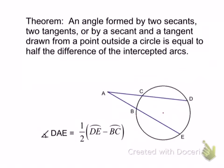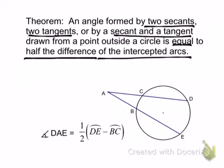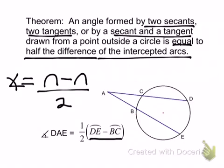The next theorem we want to talk about is for angles formed by two secants, two tangents, or by a secant and a tangent. It says the angle is equal to half of the difference of the intercepted arcs. So instead of adding my arcs, I'm going to subtract them, but I'm still taking half. Remember, when you subtract to get positive answers, you always want to start with the larger value.